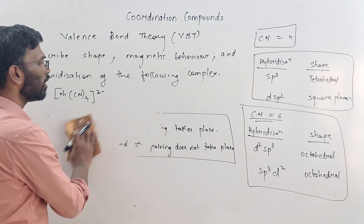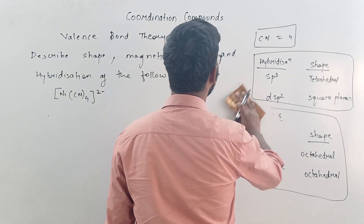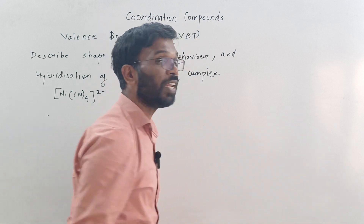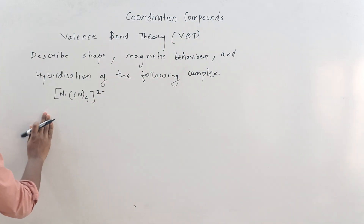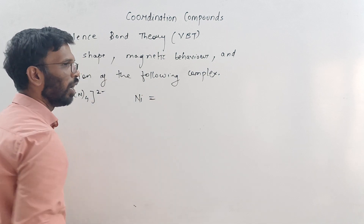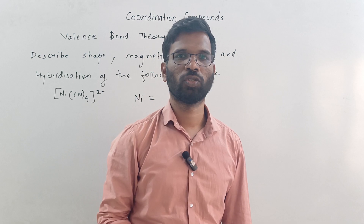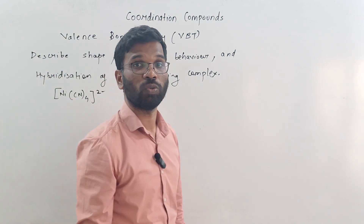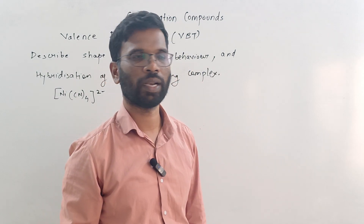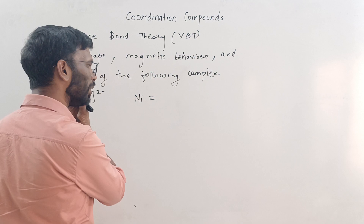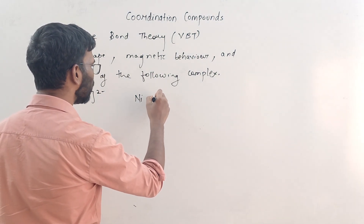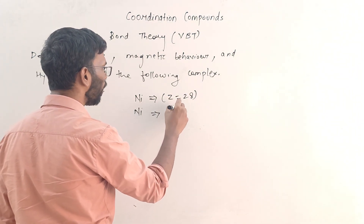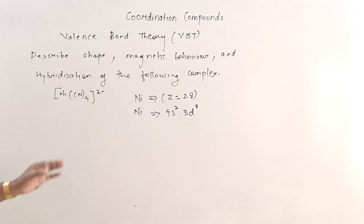Coming back to the question: we need to find the magnetic behaviour, hybridisation, and shape of the complex. We apply Valence Bond Theory, which means writing the electronic configuration of nickel. Nickel's atomic number is 28, so its electronic configuration is 4S2, 3D8.